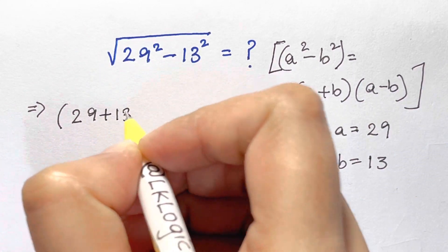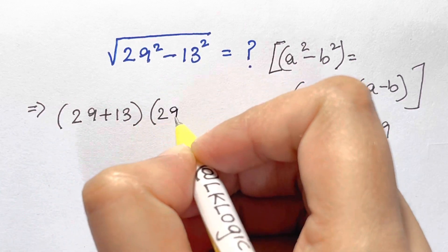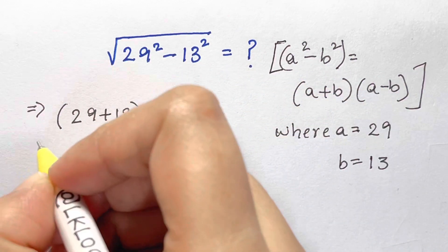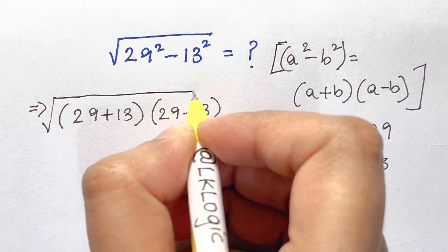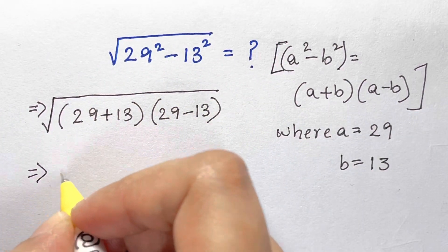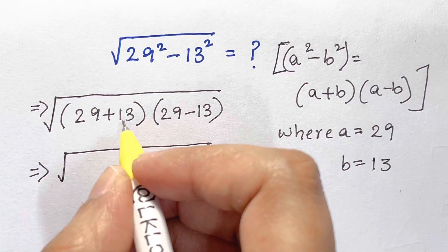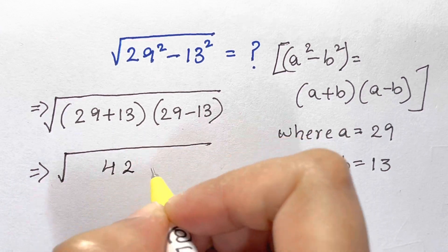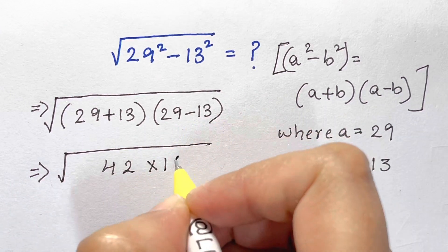We get 29 plus 13 times 29 minus 13, which is under the root. Then we get under the root of 29 plus 13 is 42 times 29 minus 13 is 16.